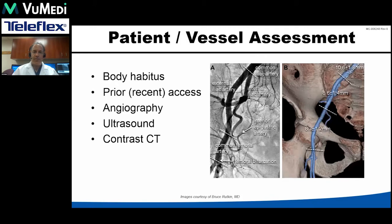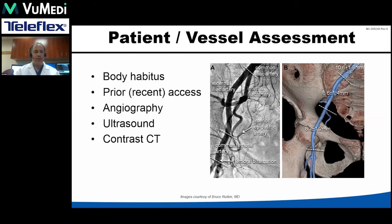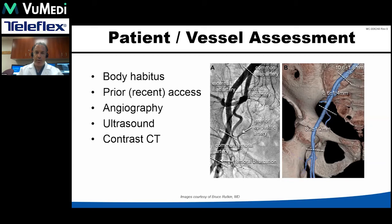Anytime we're assessing a patient for a large access procedure such as TAVR, a meticulous assessment of both the patient as well as their vessels are critically important for success. Some of the things we take into account prior to the procedure include the patient's body habitus — really both extremes are potentially problematic, either extremely thin or cachectic or obese. Prior access is also important: knowing what procedures the patient has had recently, what the access approach and strategy was, and what closure device may have been deployed. Angiography is critical for this assessment, just to identify the landmarks and our target zone in relation to the bony structures.